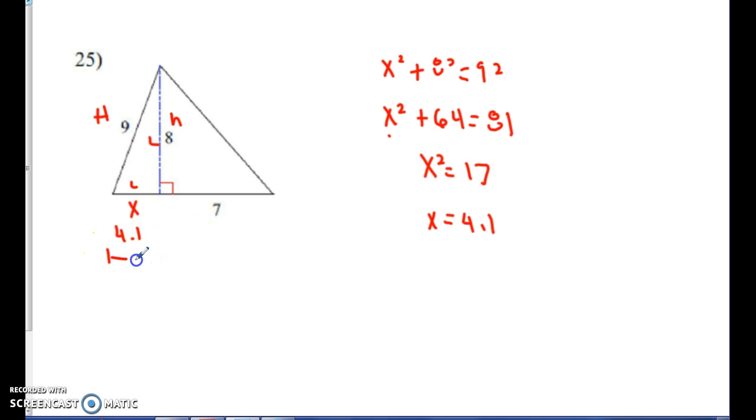So what happens is this becomes my entire base, and my entire base is 11.1 units. So to find the area, what I'm going to do is I'm going to take one half of 11.1 and multiply it by 8. And when I do that, I get 44.4 units squared to be the area.